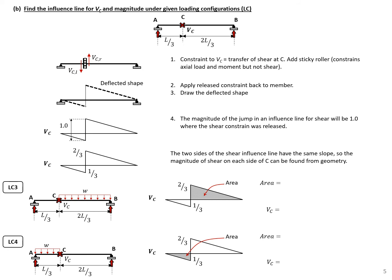The next part of the problem looks at the shear at point C, located L/3 from the left support on the simply supported beam. To draw the influence line, we release the shear constraint by adding a sticky roller, then apply the shear back with positive sign convention and deflect the structure. The same angle appears on both sides of the released restraint, but vertical displacement is allowed. The jump equals 1.0, so the value on the left side of C is −1/3 and on the right side is +2/3.